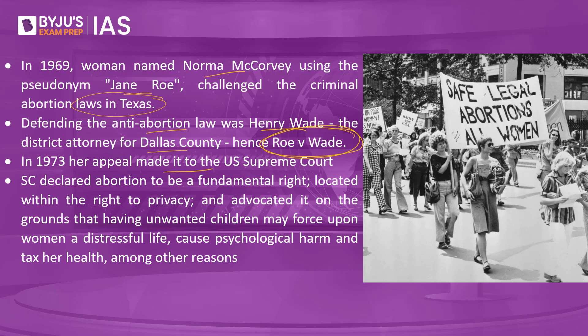In 1973, her appeal made it to the US Supreme Court. The question before the court was: does the American constitution recognize a woman's right to terminate her pregnancy by abortion? They argued that the abortion laws in Texas and Georgia went against the US Constitution because they infringed on the woman's right to privacy. By a vote of 7 to 2, the court justices ruled that the government did not have the power to prohibit abortions, and that a woman's right to terminate a pregnancy was protected by the US Constitution.